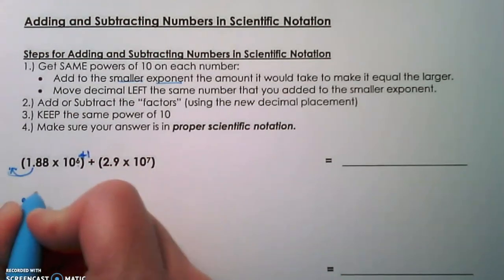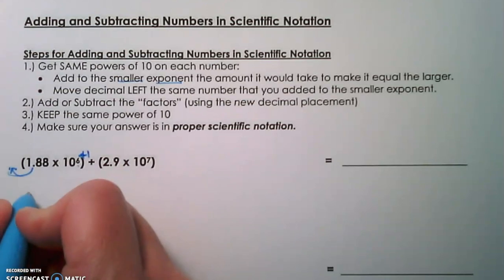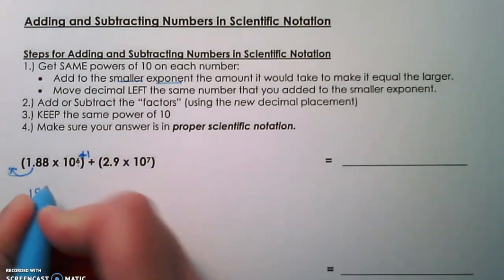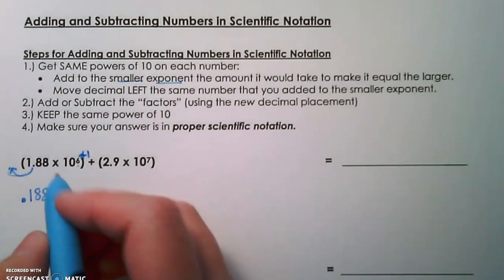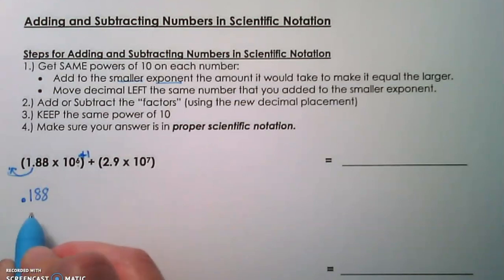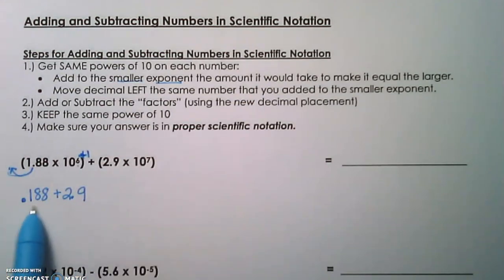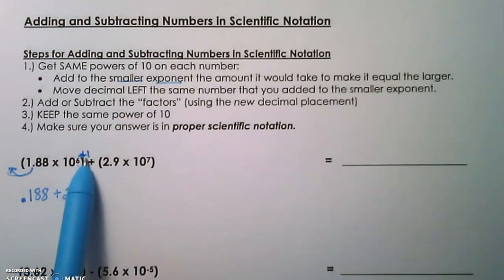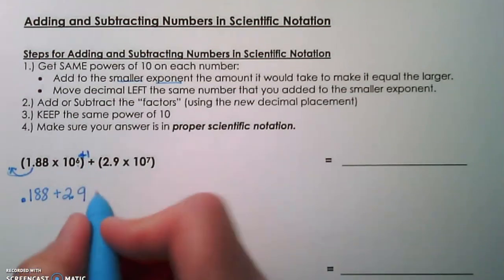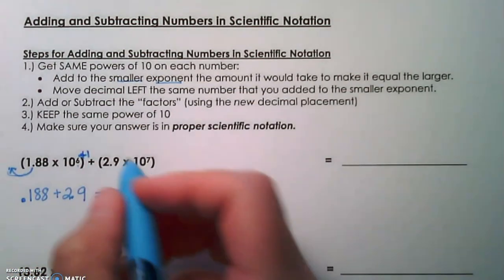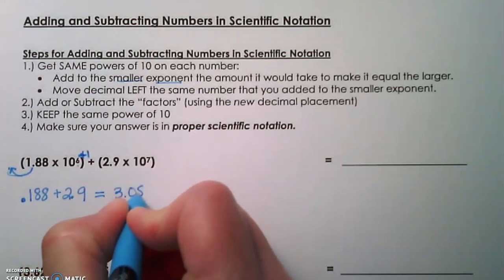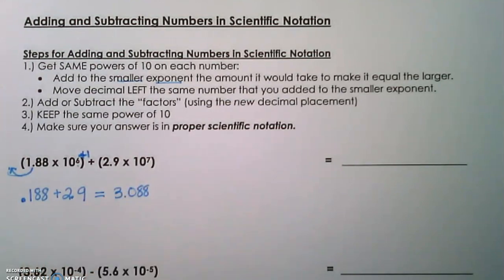Then it tells us to add or subtract the factors. So here we are adding, so we're going to do 0.188 plus 2.9, using the new decimal we created when we added one to the exponent. Adding those two factors together gives us 3.088. The last step says keep the same power of 10.